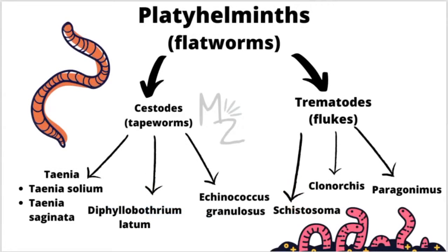Trematodes are further classified into Schistosoma, Clonorchis, and Paragonimus. There are some trematodes of milder importance, we will also be discussing them at the end of this trematode series.